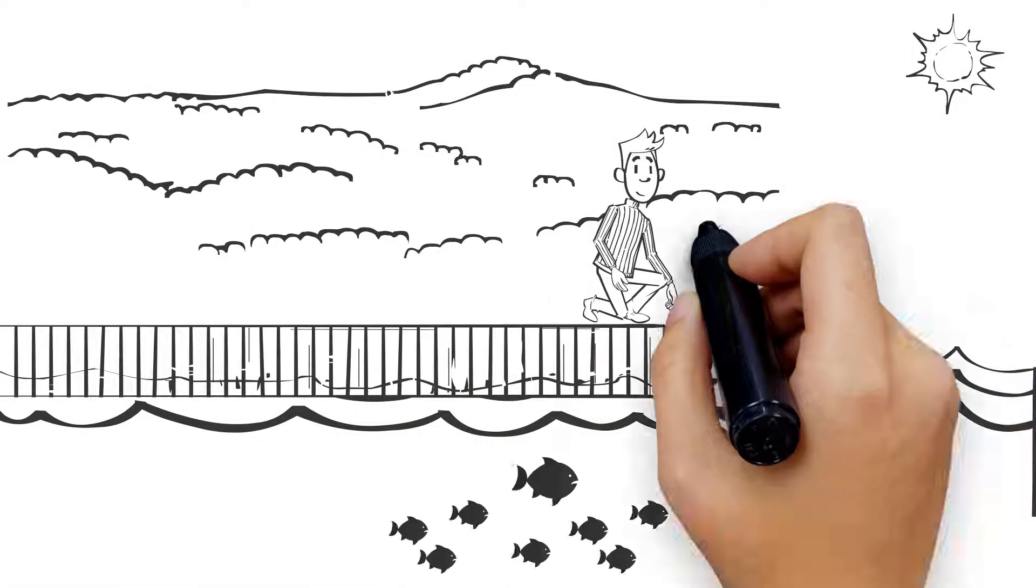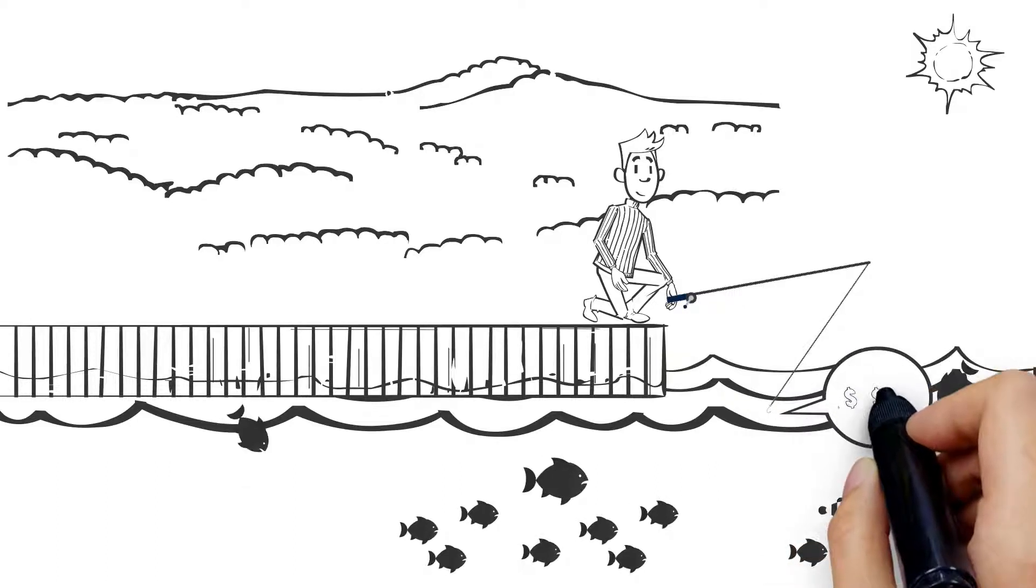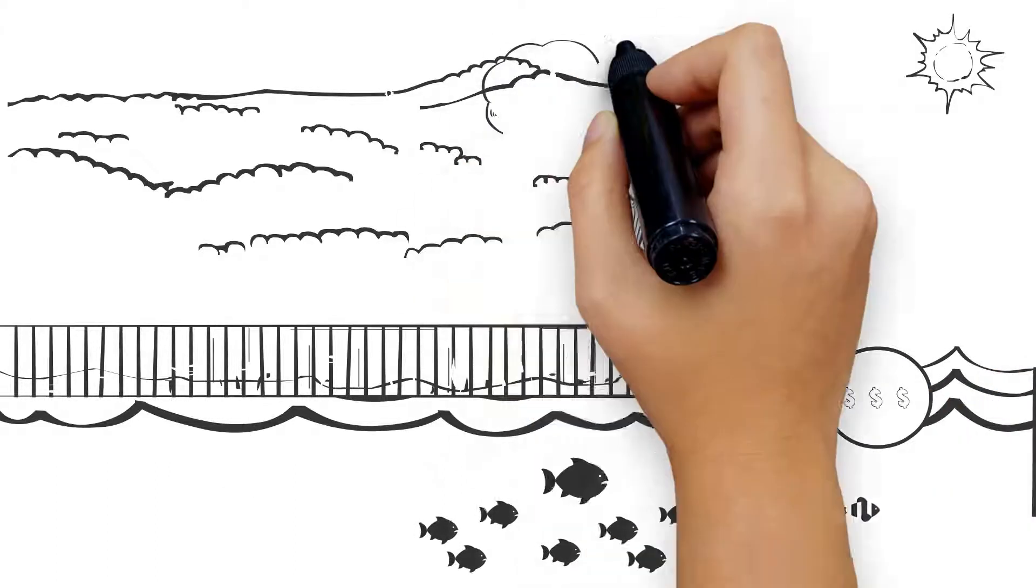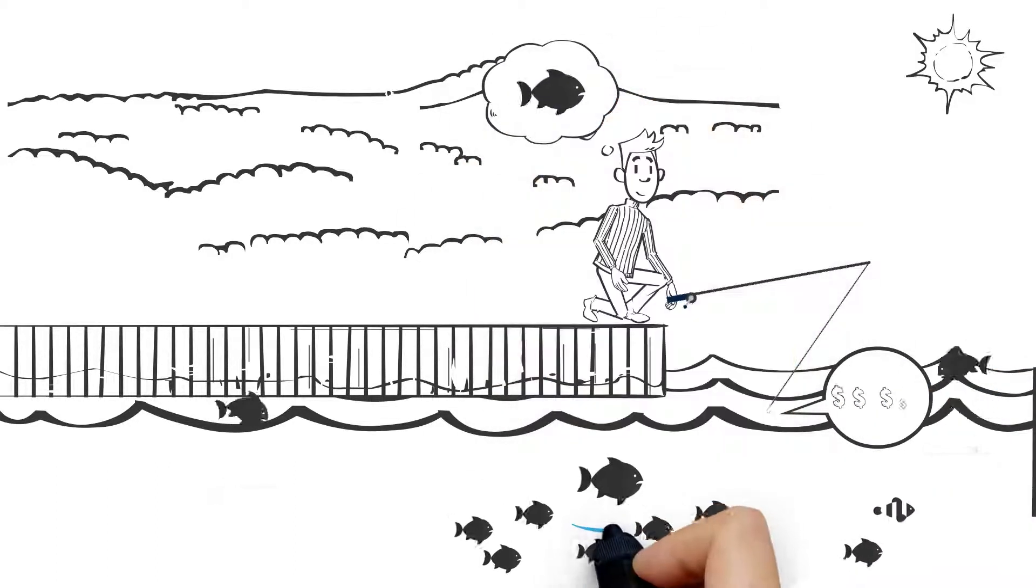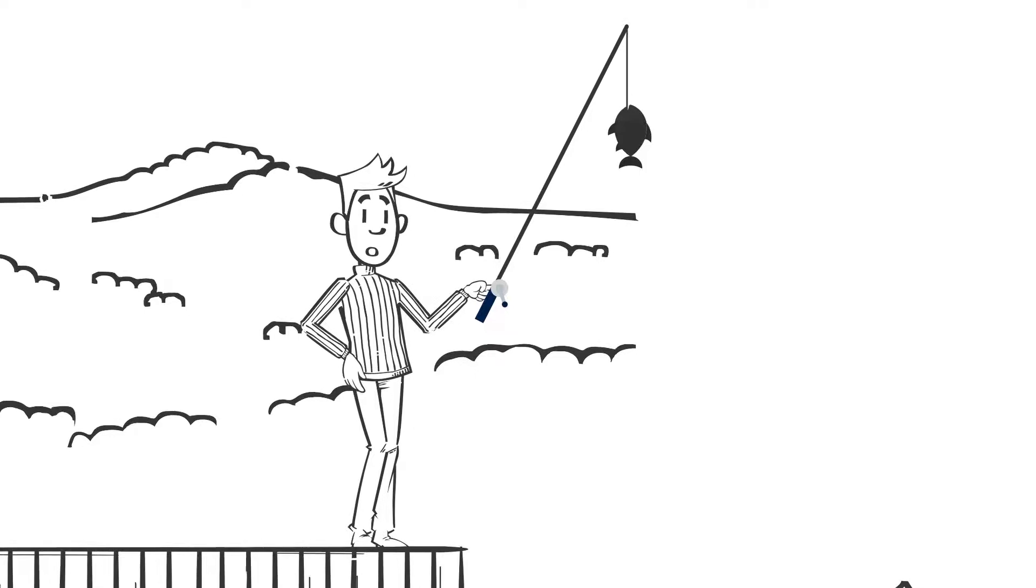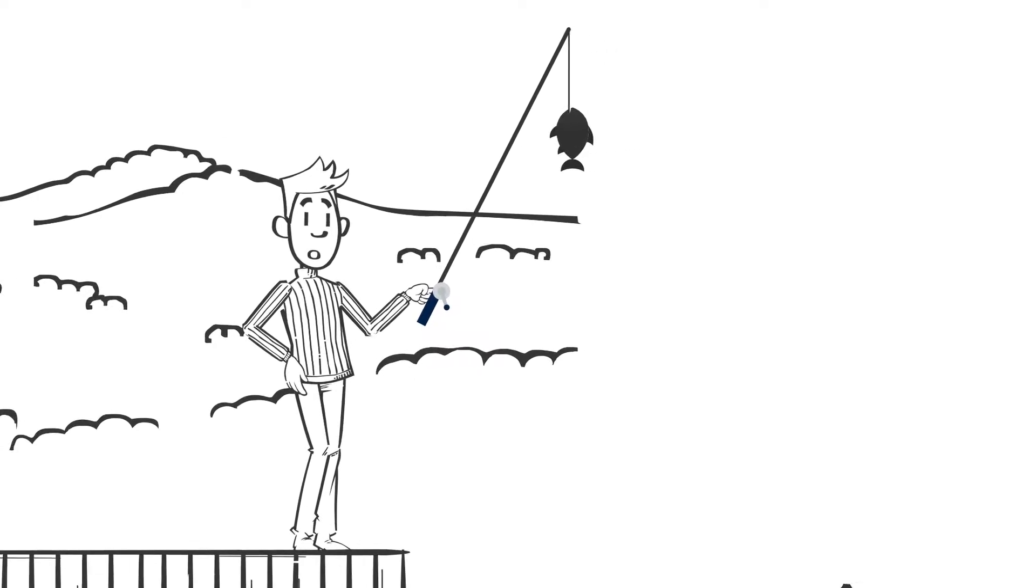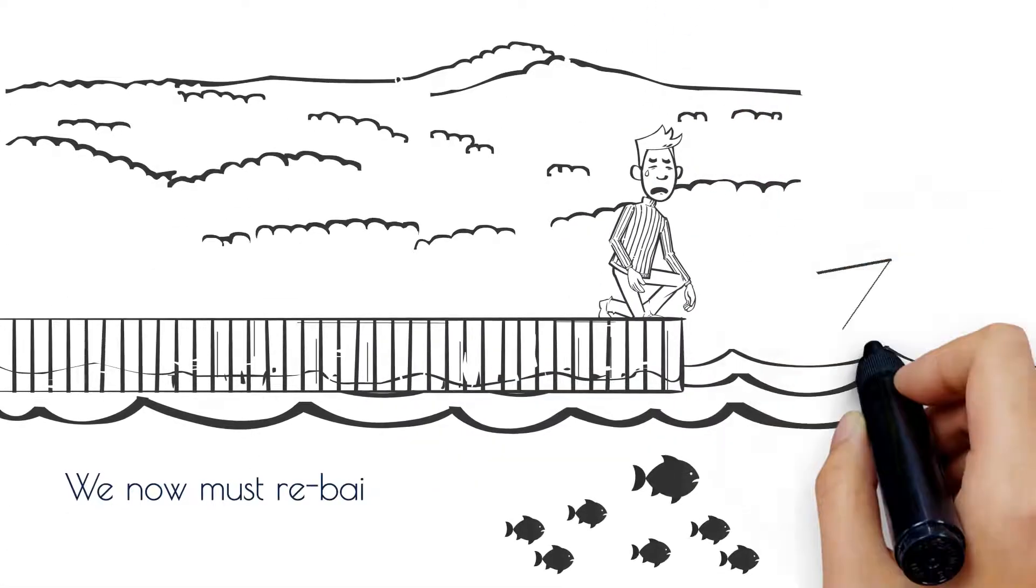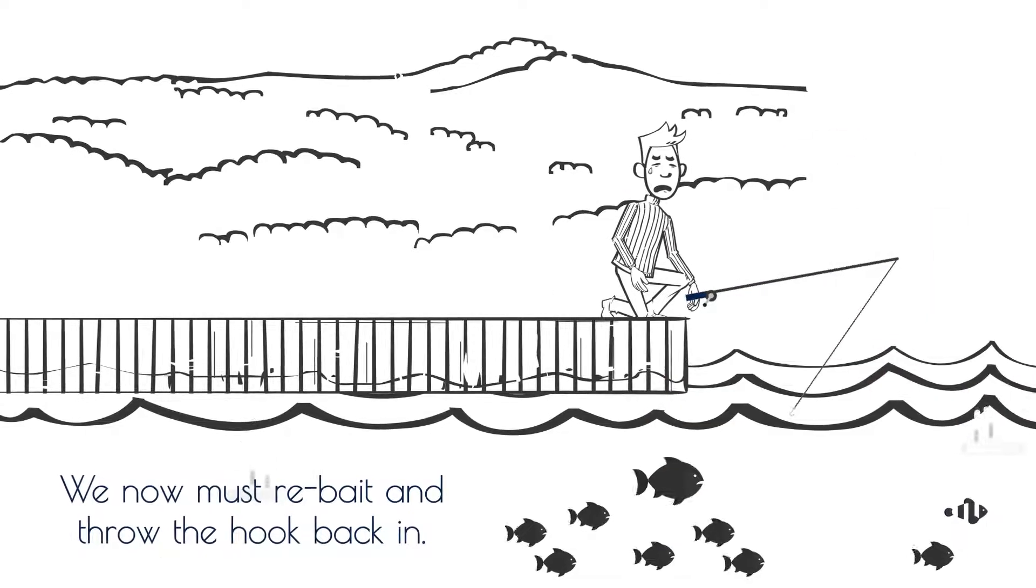The bait is the price. We're throwing in the line and looking for that one big fish. If something bites, we pull it in. We later find out the fish isn't right for us. We never had a choice - we had to pull it in. Now it's wasted our time. We must rebait and throw the hook back in.